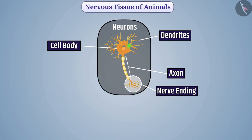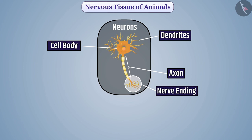The stimulus crosses the synapse and reaches the dendrites of the next neuron. Stimulus in the nervous tissue is conducted in only one direction — from dendrites to the terminal end of the neuron. One nerve cell, that is a neuron, can be one meter in length.